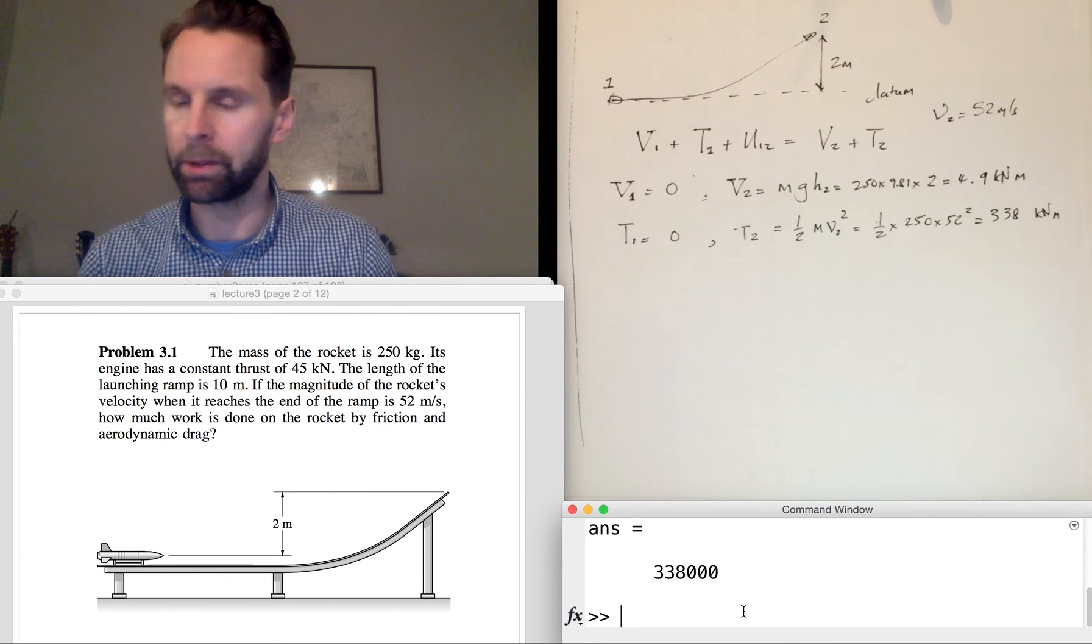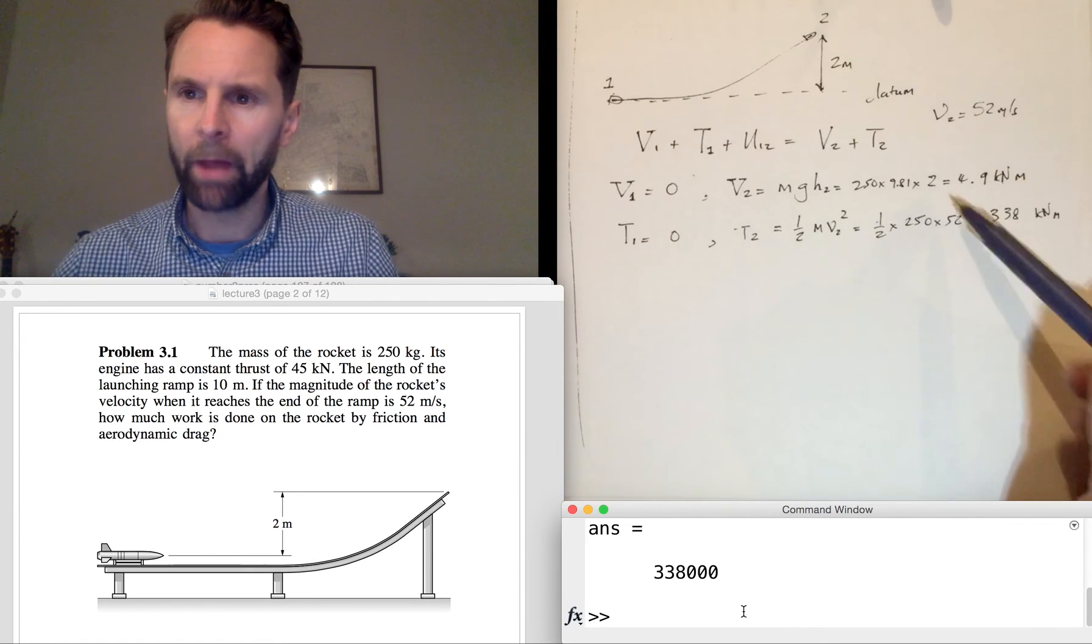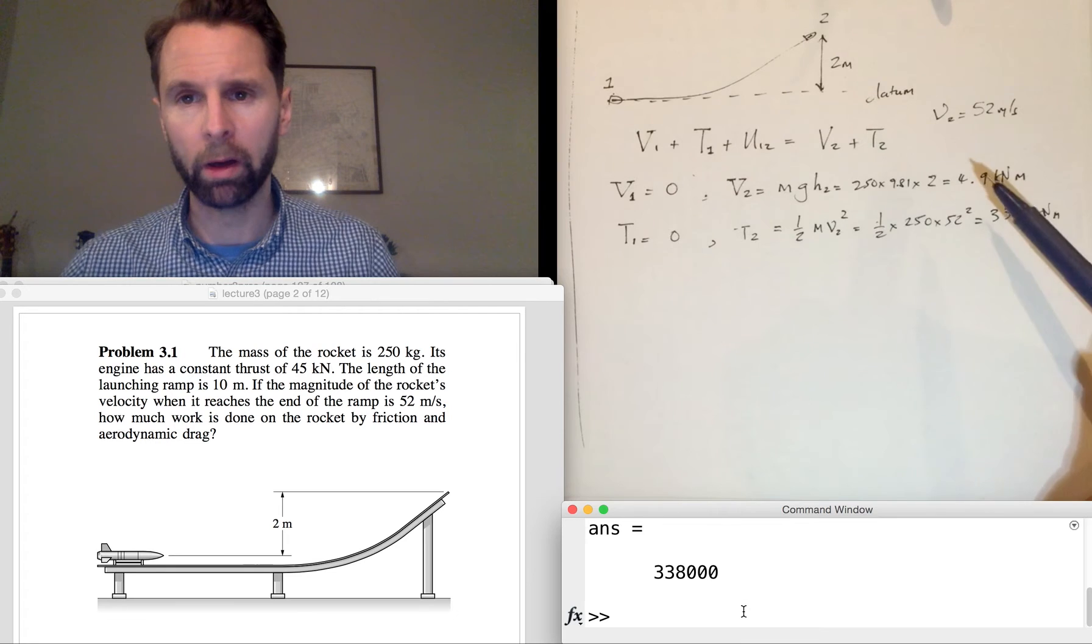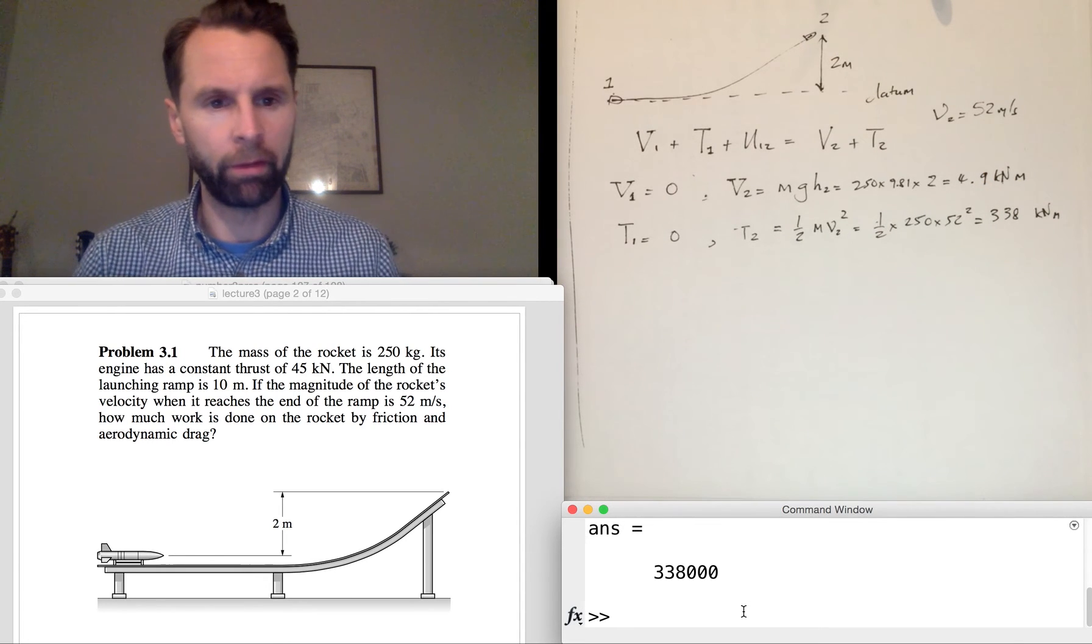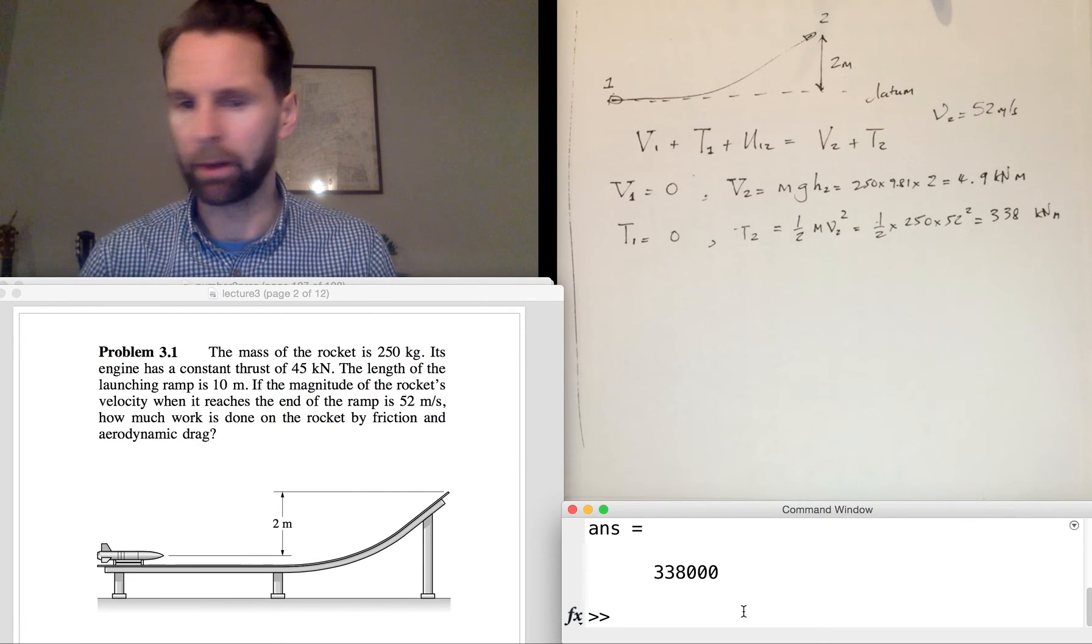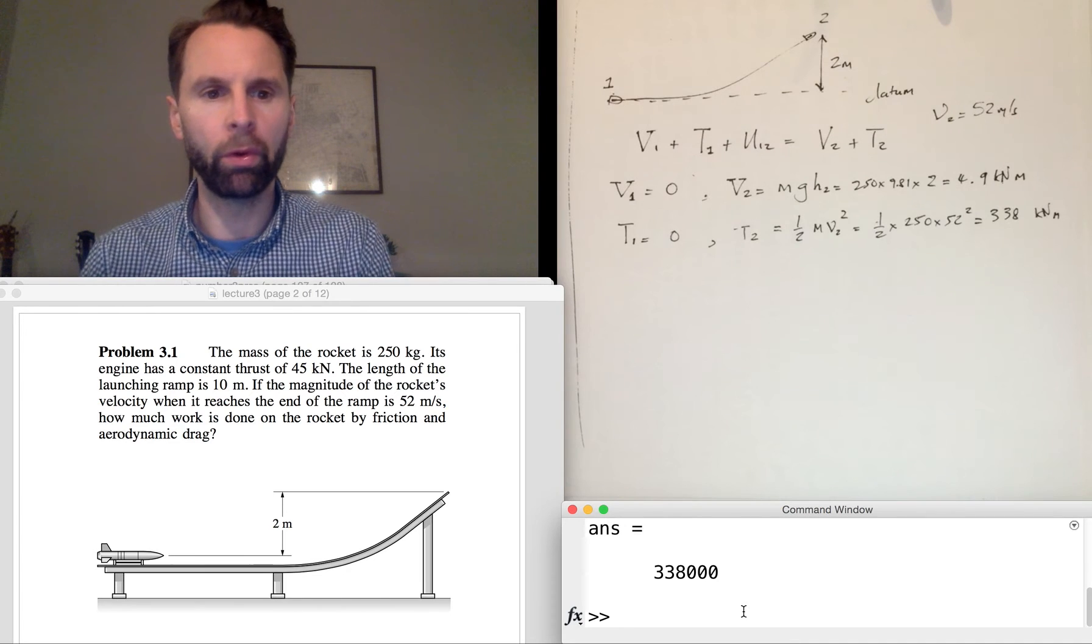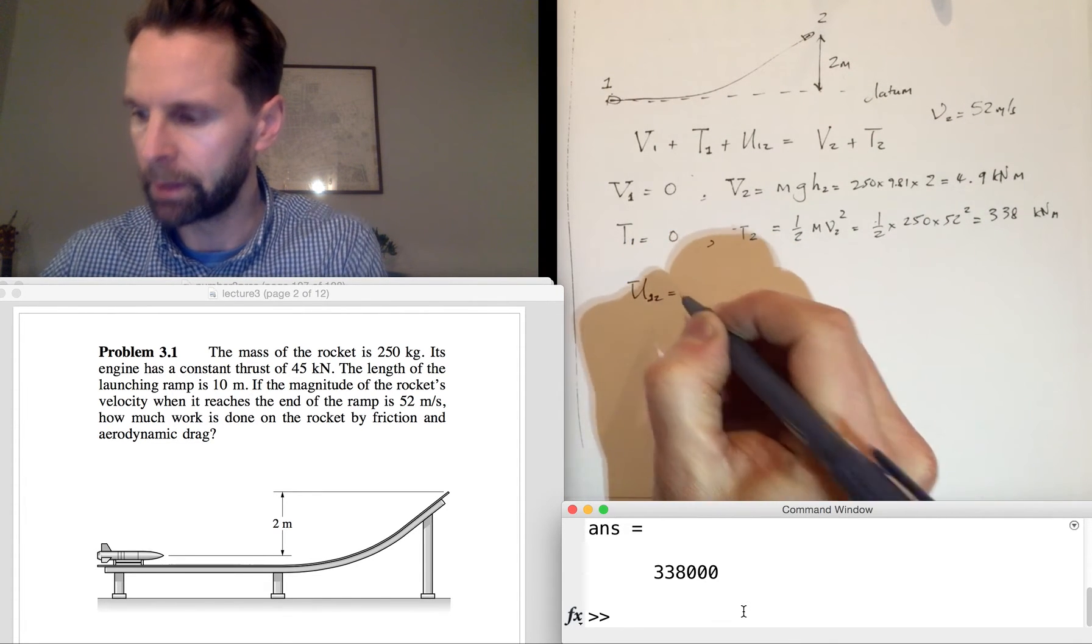At Position 2, it's 338 kilonewton-meters. So it must get that energy by a very large work done on the rocket through the thrust, but there's also some of that is being taken away, so we'll lump the thrust in with all the non-conservative forces.